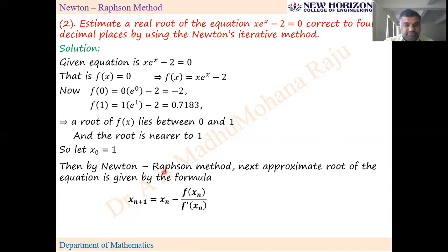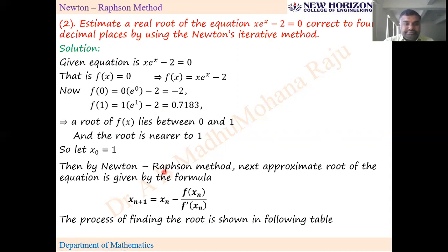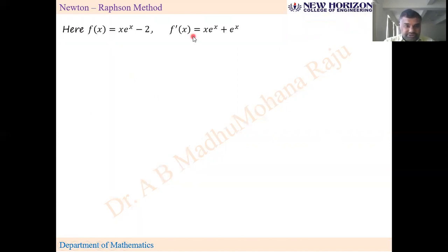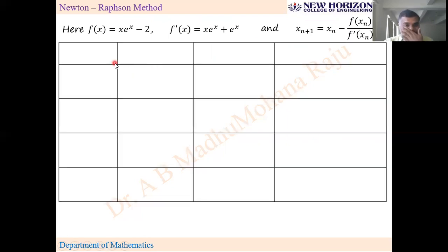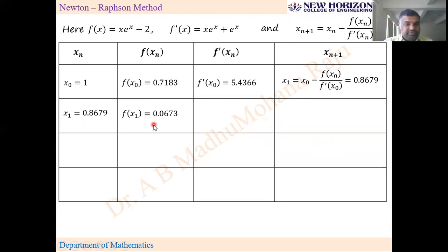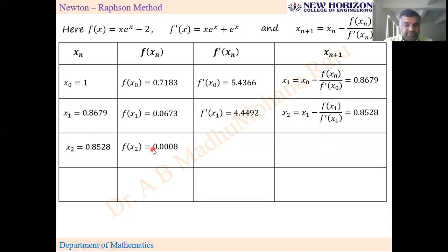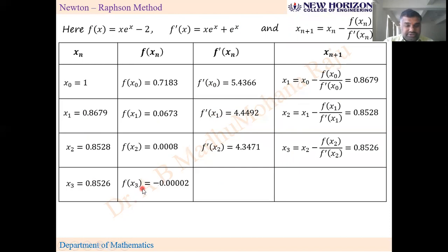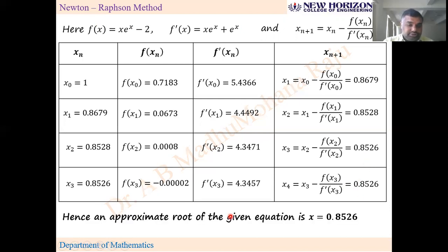Then by Newton-Raphson method, list out the formula and proceed in tabular form. List out f(x) and f'(x). The table has columns: xₙ, f(xₙ), f'(xₙ), and xₙ₊₁. Starting with x₀ = 1, compute f(x₀) and f'(x₀) to get x₁. Use x₁ to get x₂, then x₂ to get x₃, then x₃ to get x₄. When two consecutive values are equal, stop. The approximate root is x = 0.8526.